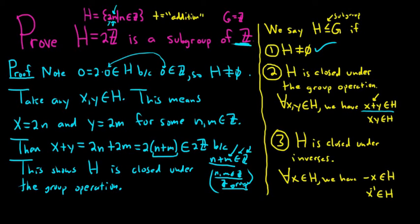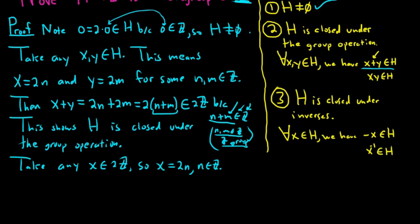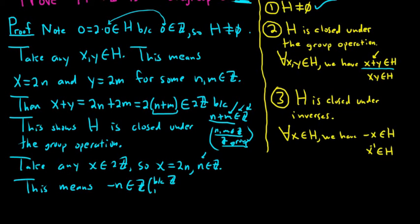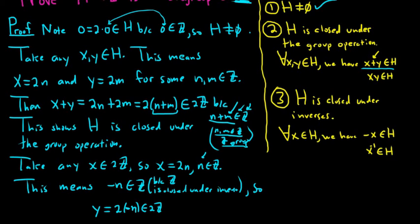Now we have to show that h is closed under inverses. Take any x in 2Z, so x equals 2n for n in Z. Now n is in Z, and Z is a group, so since Z is closed under inverses, negative n is also in Z. This is because Z itself is closed under inverses: n is in Z, Z is a group, so negative n is also in Z.